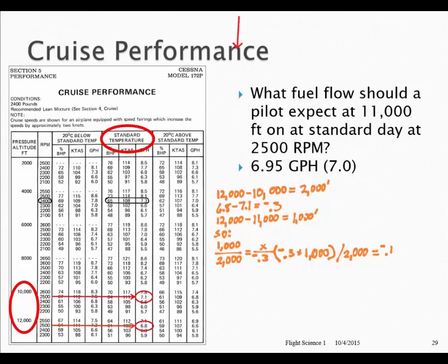Then we take 6.8 gallons per hour corresponding to the 12,000 foot pressure altitude and subtract negative 0.15. Subtracting a negative number means we add it, and we end up with 6.95 gallons per hour.